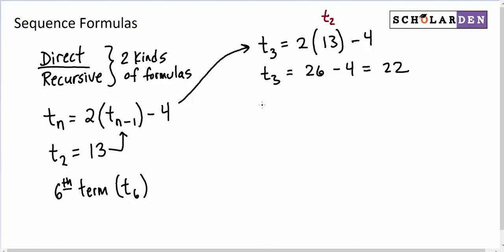All right. Now our formula allows us to get T₄ by going back and putting T₃, the term before it. So now it's 2 times T₃, minus 4, which is 44, minus 4, which is 40.